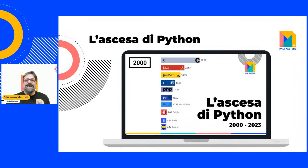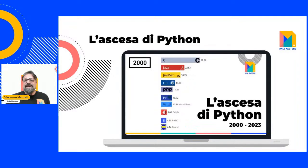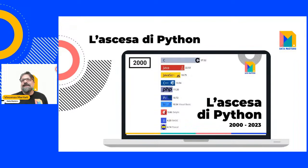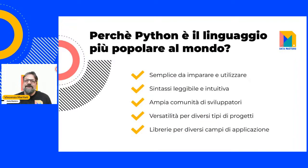Python è stato concepito con un obiettivo chiaro: rendere la programmazione accessibile per tutti, dai principianti agli esperti. Come si può vedere da un famoso video sulla classifica dei linguaggi di programmazione negli ultimi 25 anni, nel 2000 Python non era tra i più utilizzati, meno diffuso rispetto a C, C++ e Java. Negli ultimi anni invece Python è riuscito a svettare, diventando il linguaggio di programmazione più usato a livello globale.